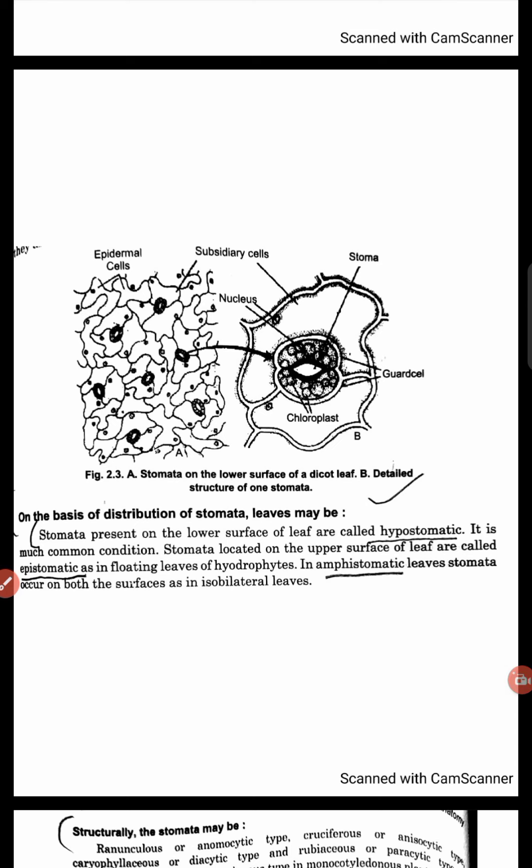If the stomata are present on the upper surface of the leaf, we call them epistomatic. Epi means upon. We can see this in floating leaves like hydrophytes, which are aquatic plants. Amphistomatic means amphi, on both surfaces of the leaves. We call these amphistomatic leaves or isobilateral leaves.